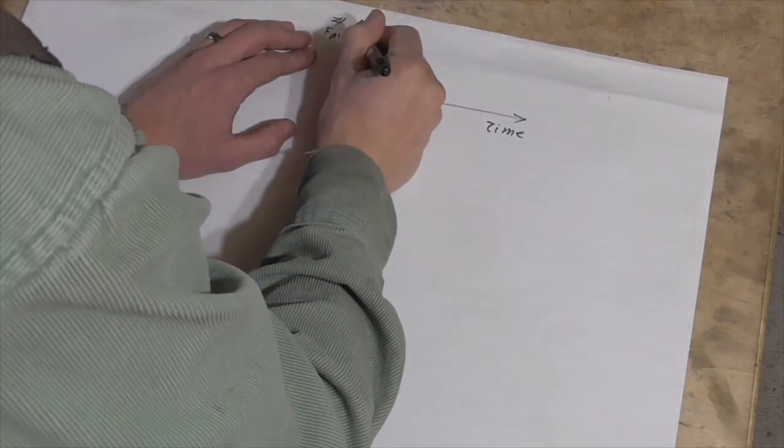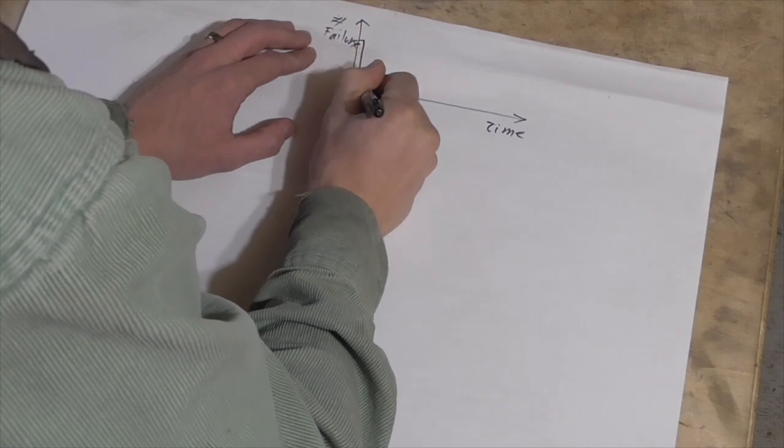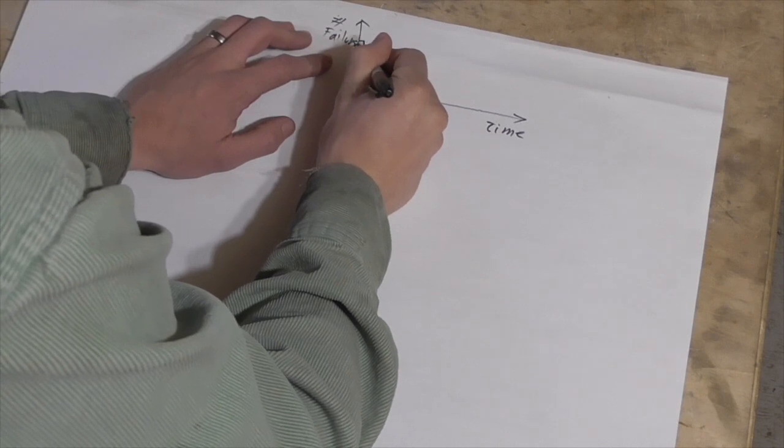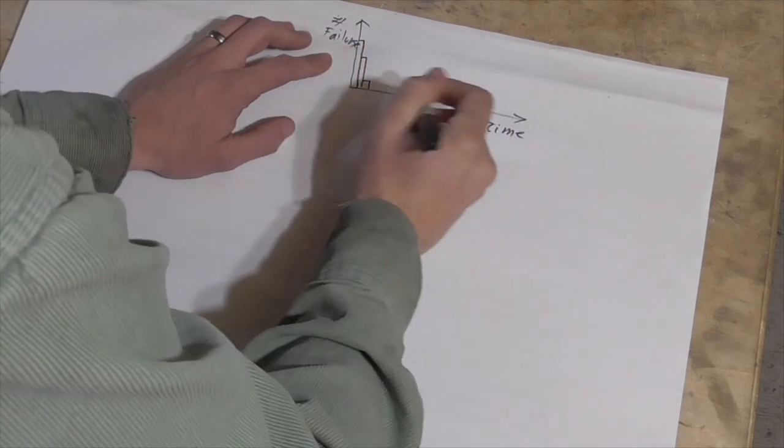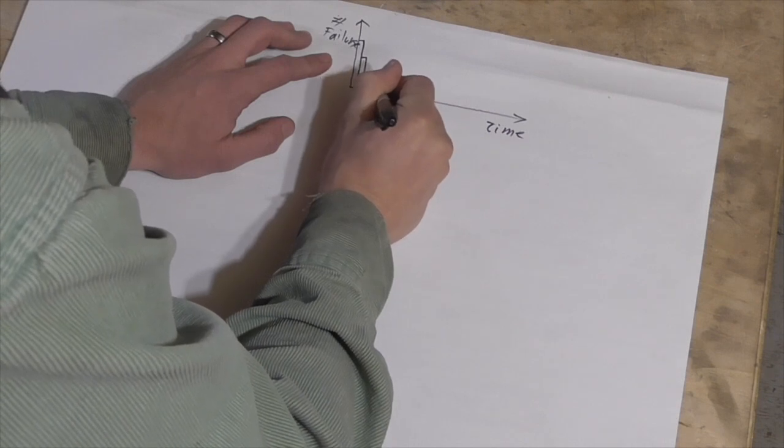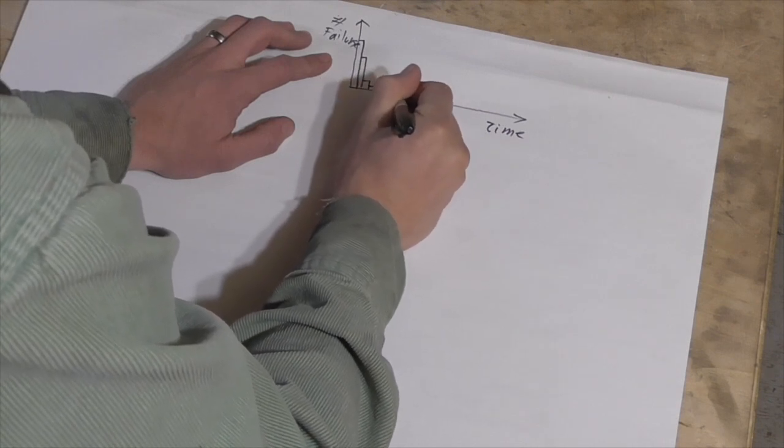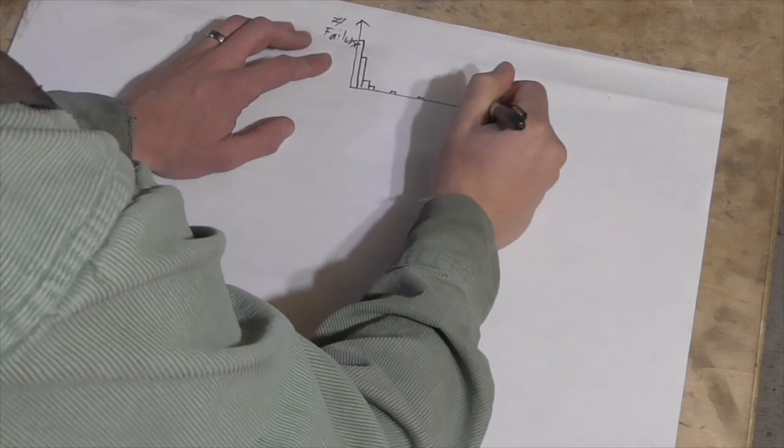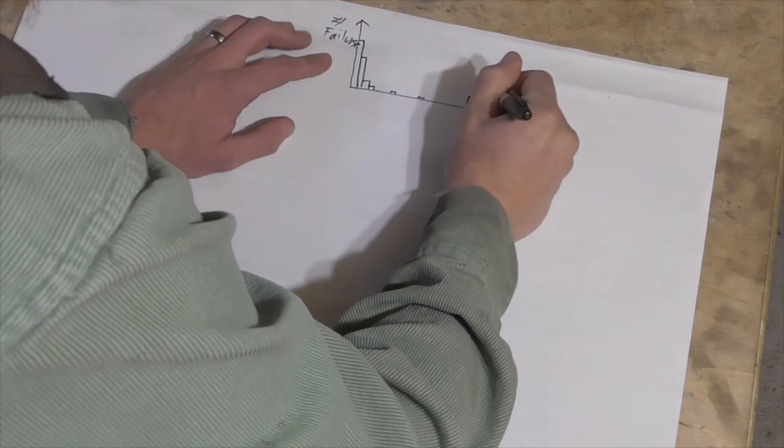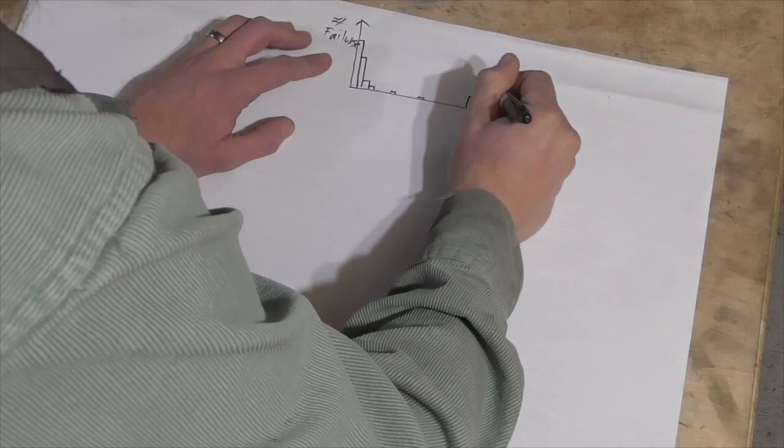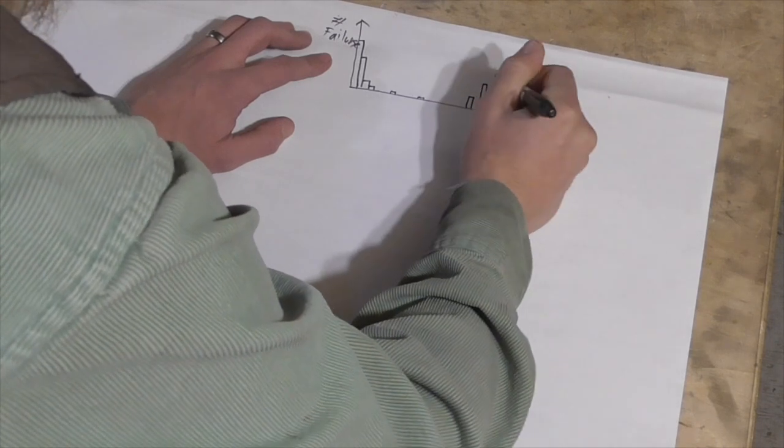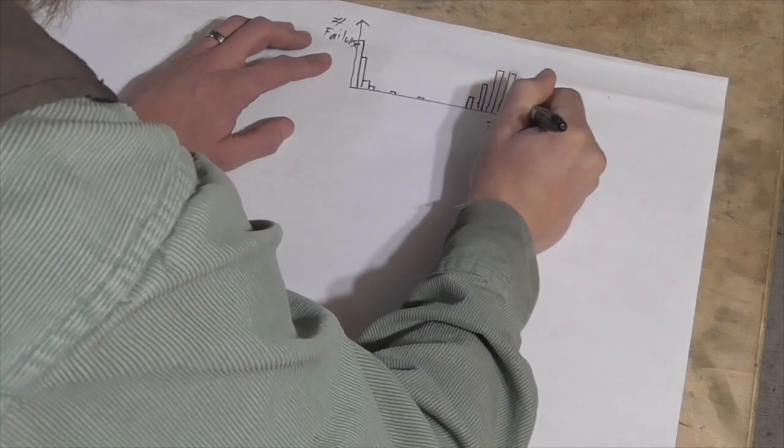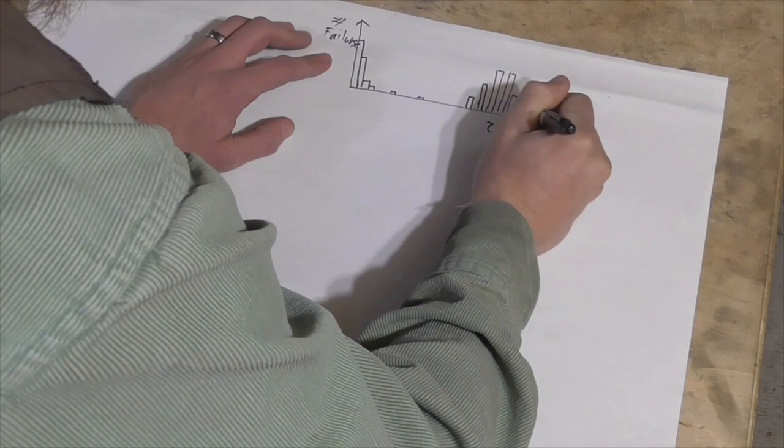So maybe the first day you've got a hundred light bulbs out of your thousand that burn out. And then the second day you've got 50, and the third day you've got 10, and then you've got one, and then you've got a couple of days where you don't have any, then maybe you have another one, another one. And then eventually, you have another 10 that burn out, another 50. And then you get a whole bunch burning out kind of up here. And then eventually you're going to run out of light bulbs, and they're going to trade off.